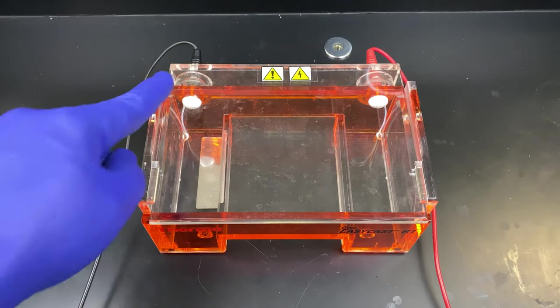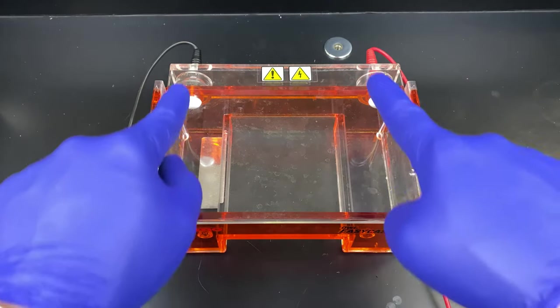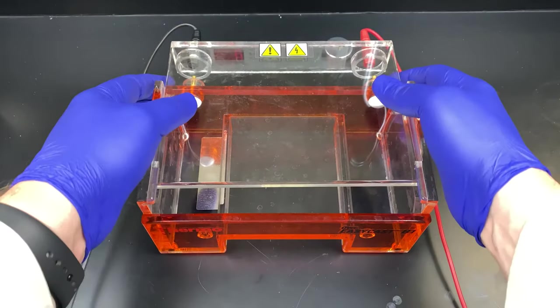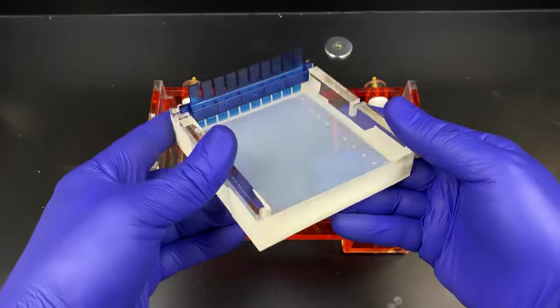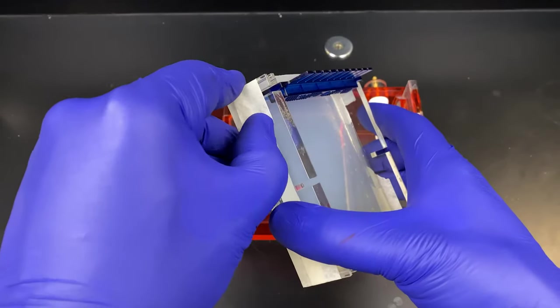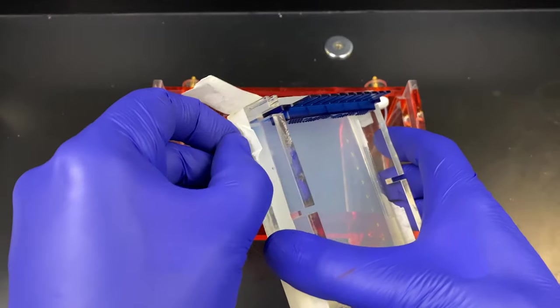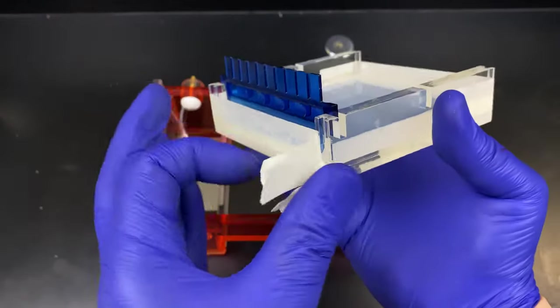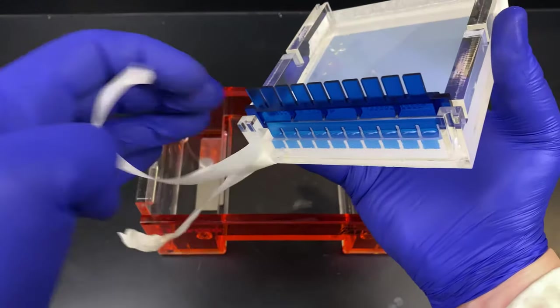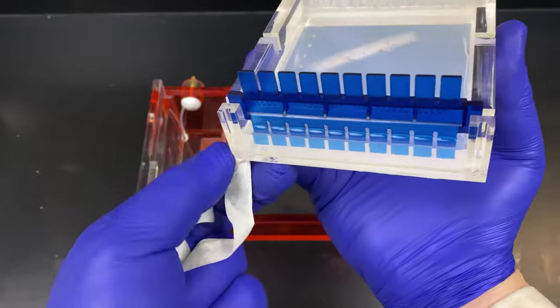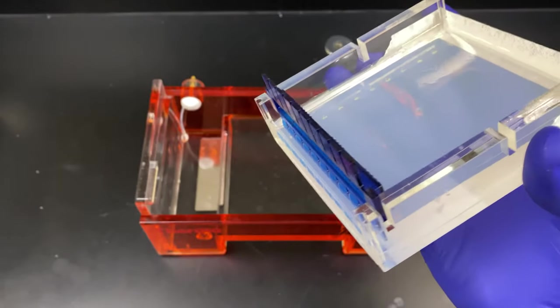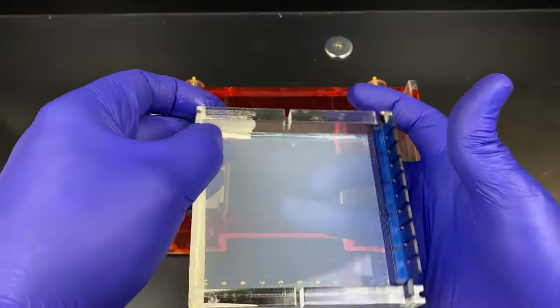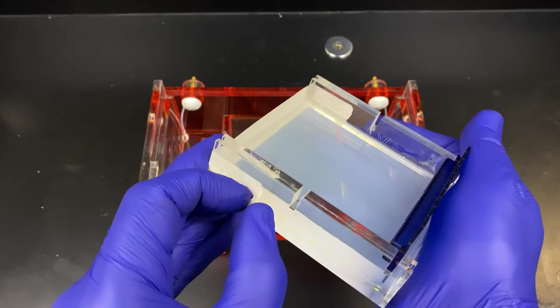This is our electrophoresis unit. You can see there's a black and a red wire connected to them. This lid slides off. There'll be electricity running through here. We don't want to be able to open it and electrocute ourselves. Once our gel has solidified, you can see it is more of an opaque shade now. We can now remove the masking tape. Be careful. The gel might slide out of this unit. Remember, it's like jello. If you hold it upside down, it could slide right out. And then you have to start all over again. So gently remove the masking tape from both sides.